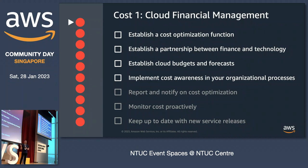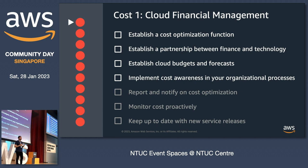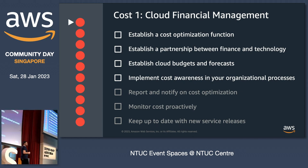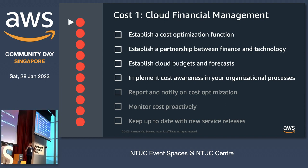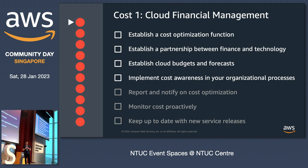Let's start with the cloud financial management part — first, you need to establish a cost optimization function, meaning you need to have a cost optimization team. You can do that by identifying key stakeholders from finance as well as technology. These two departments need to work together to eventually become a cost-optimized organization. All you need to do is identify the key stakeholders, align with them that you're starting this new team, and create an email distribution list to communicate with them.